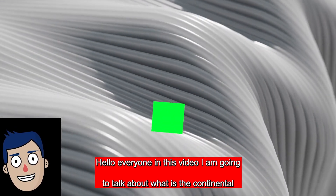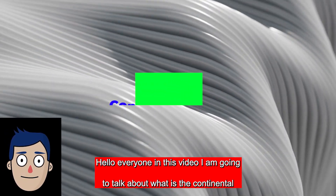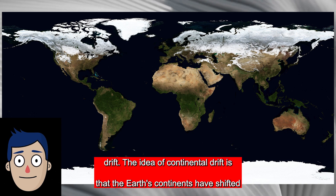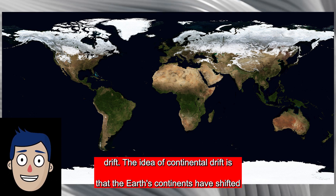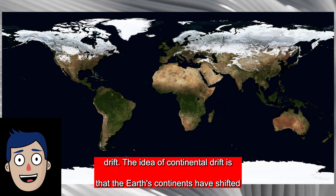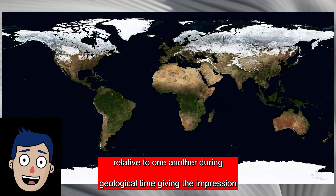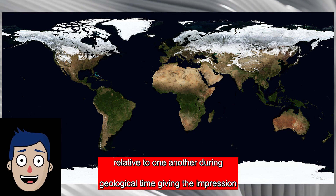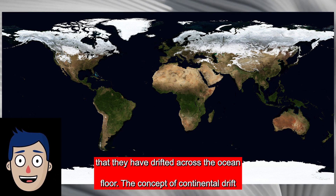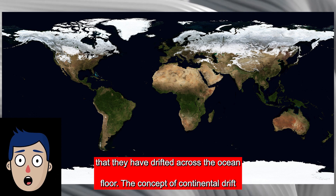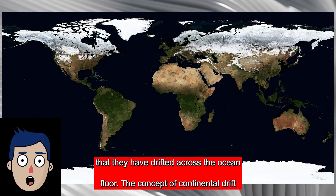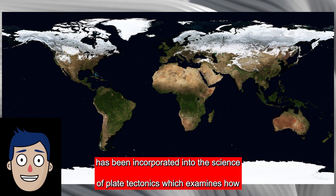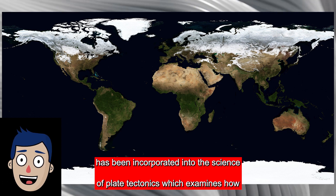In this video, I am going to talk about what is continental drift. The idea of continental drift is that the Earth's continents have shifted relative to one another during geological time, giving the impression that they have drifted across the ocean floor. The concept of continental drift has been incorporated into the science of plate tectonics.